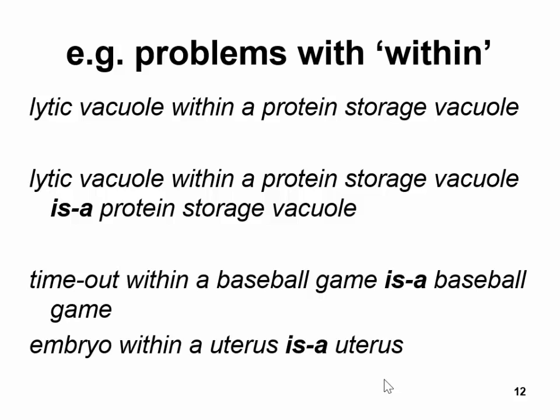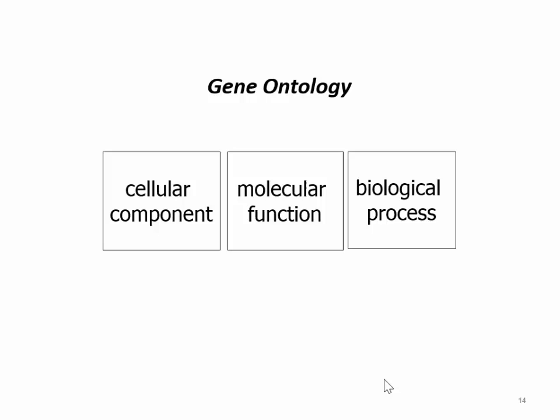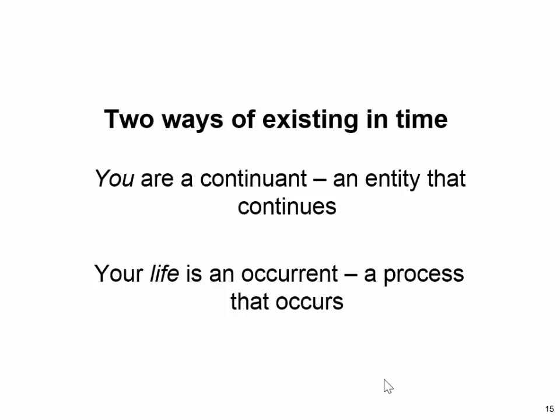There are many similar problems in the gene ontology as it was in 2004. Since then it has got a lot better because the people who maintain the gene ontology have accepted these principles. The gene ontology consists of three sub-ontologies: a cellular component ontology, a molecular function ontology, and a biological process ontology.